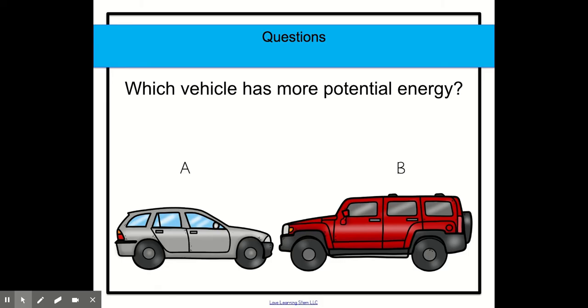Which vehicle has more potential energy? Which vehicle has more potential energy? A or B? If you thought or said B, you are correct. It has more mass and so it has more potential energy. So that's it for today. If you have any questions, let your teacher know.